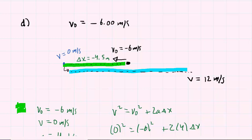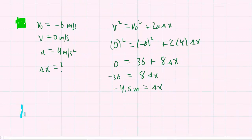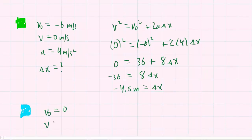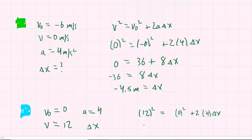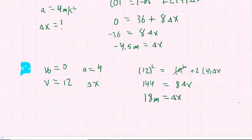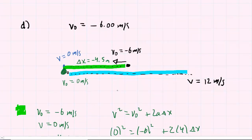Now for the blue path: the initial velocity is 0 meters per second because the particle momentarily stopped, then it speeds up to reach 12 meters per second. The acceleration is still 4 meters per second squared. Using the same equation: 12 squared equals 0 squared plus 2 times 4 times delta x. We get 144 equals 8 delta x. Dividing both sides by 8 gives a displacement of positive 18 meters. That positive sign makes sense because along the blue path the object was overall moving to the right.